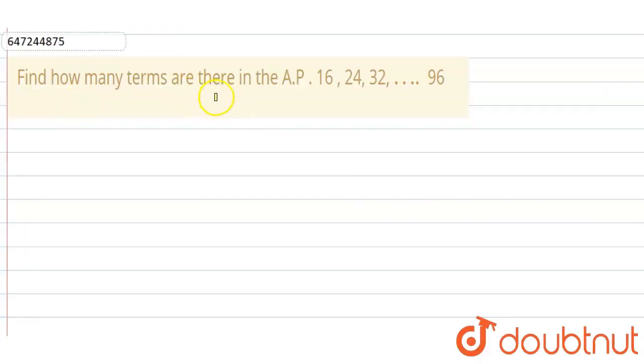Hello everyone, so the problem is how many terms are in this AP. The AP is given as 16, 24, 32, and the last term is given as 96. So let me calculate the number of terms. We start our solution here.